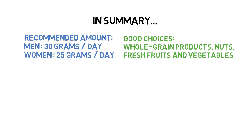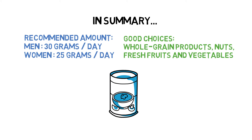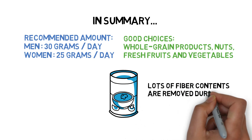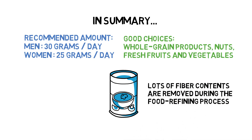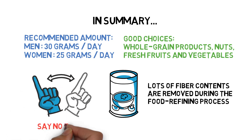Those processed foods such as canned vegetables and pulp-free juices contain a low amount of fiber compared with fresh fruits. This is because lots of fiber contents, such as the coat and fruit pulp, are removed during the food refining process. So if possible, you should always try fresh food instead of those processed foods.